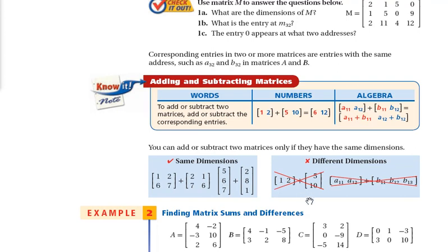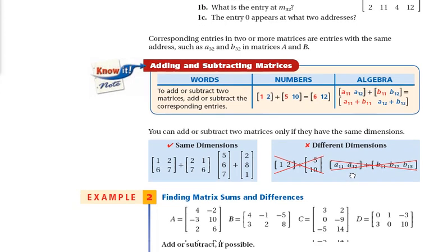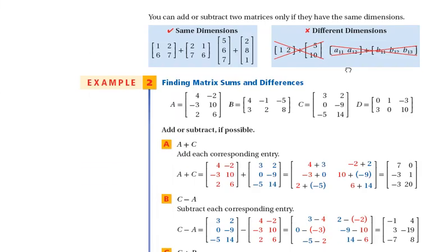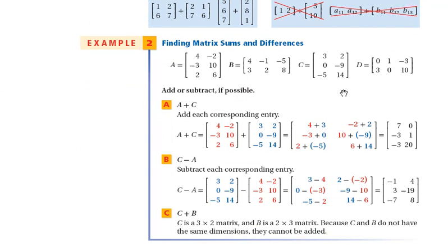You can see here, we have two different dimension matrices, and so we cannot add or subtract them. In the examples here, you want to just take a quick look at some of these examples on how you're adding the matrices together. Here we're subtracting them. When you subtract them, you have to make sure that you take that subtraction sign to each element. So be careful with that as you go through.